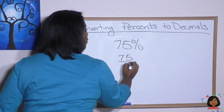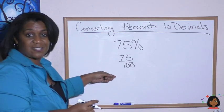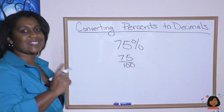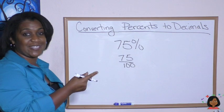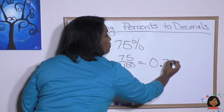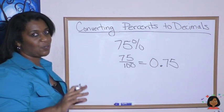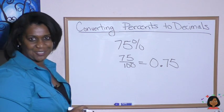So 75 percent is 75 over 100. We can turn it into a fraction first, and from here it's pretty easy to see what the decimal equivalent is. 75 over 100 is the same thing as 0.75. Let's take a look at a few examples and possible variations of this.